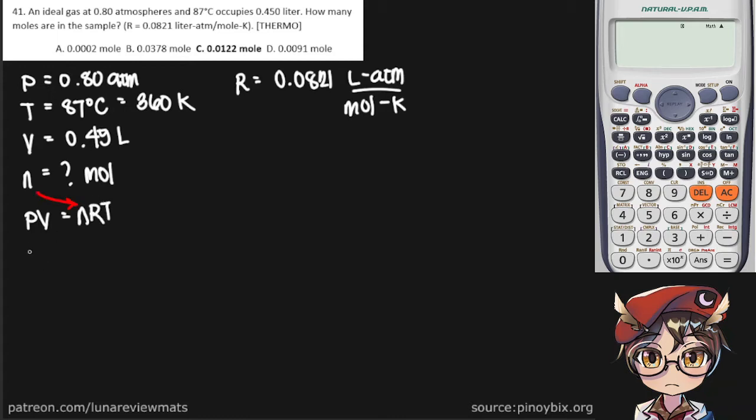And now we can simply start putting the values in. That's the pressure, that's the volume, I'm trying to look for n, and 0.0821. Now if you check the units,